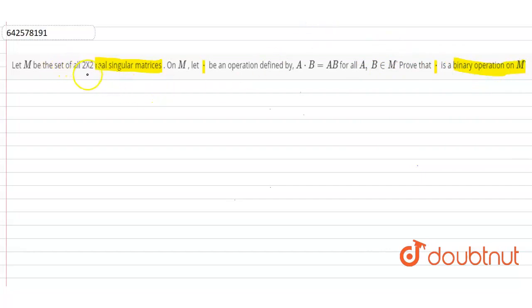So M is a set of all real singular matrices. It means that the elements of M are real numbers and M is a singular matrix. So what is a singular matrix? M is a set of all singular matrices.